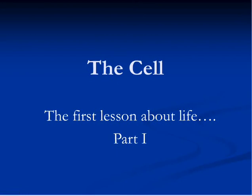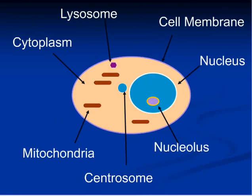Any living organism is made up of units famously known as cells. A cell needs food, it needs energy, it uses complex chemical processes to convert food into energy and discharges waste material. It also has the ability to reproduce. What was just described is the definition of life.